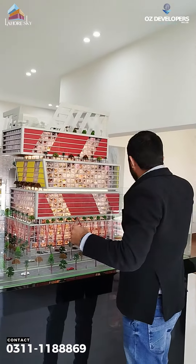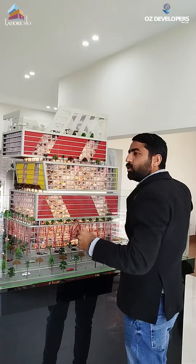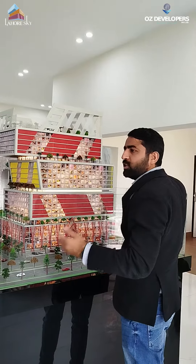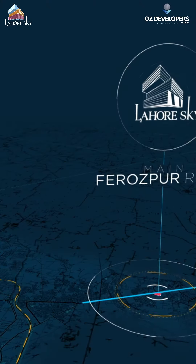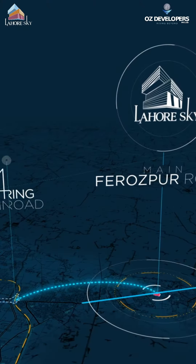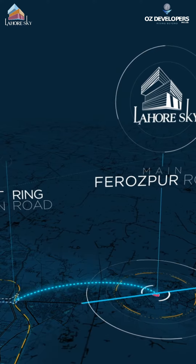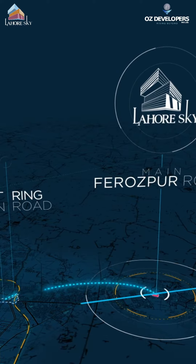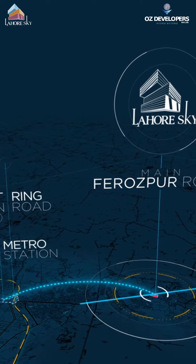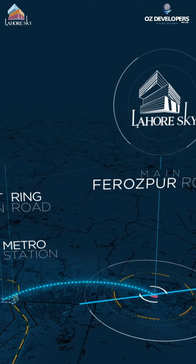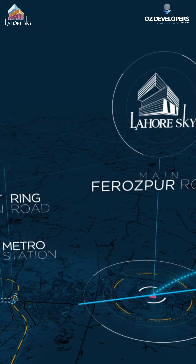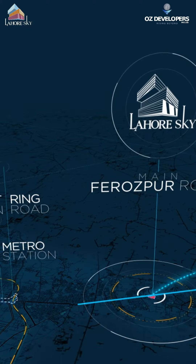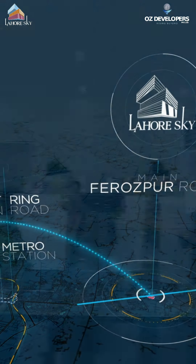If you talk about Ring Road, it is very easy to access — every person uses Ring Road. There is only 5 minutes of road. There is an interchange, which is the Gajubata Interchange, and there is only 5 minutes of road from there.